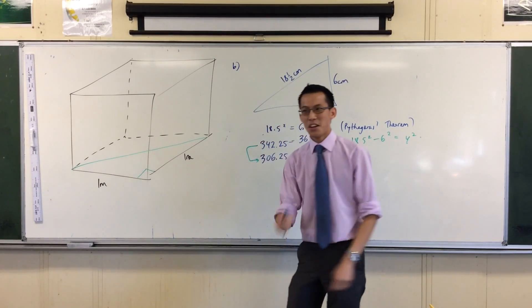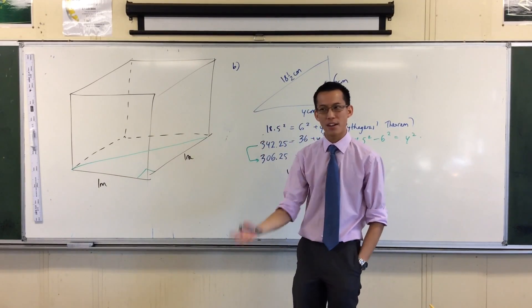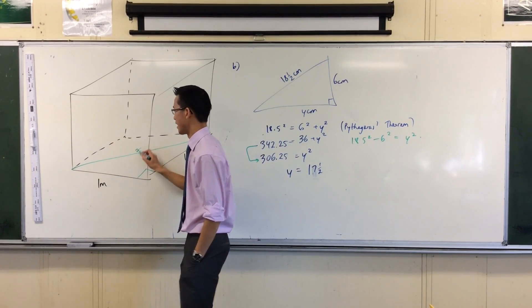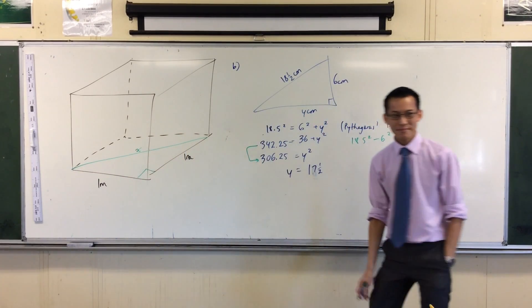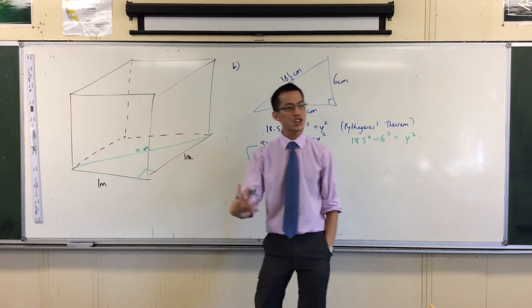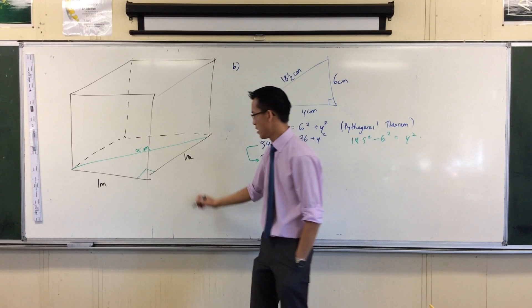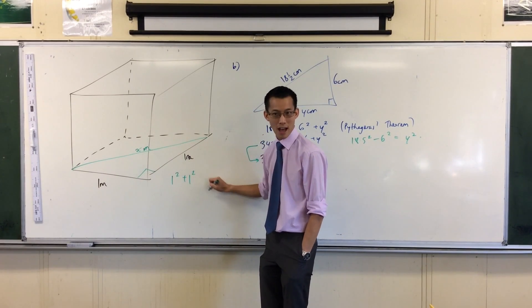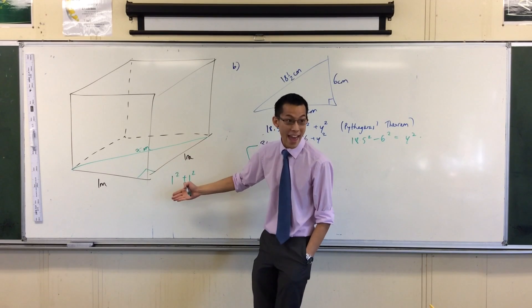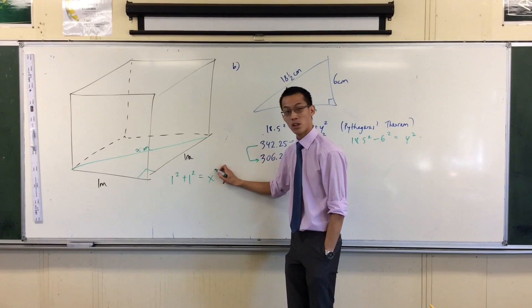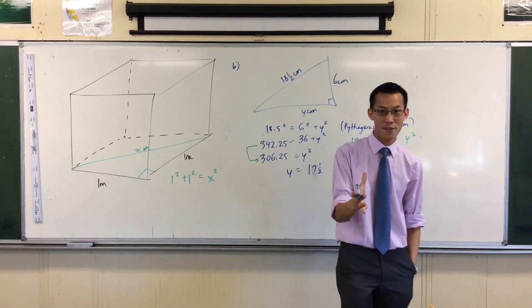So I can write out Pythagoras' theorem to work out this length. Let's call it, I'm very original, so I'm going to call it x. x meters is the length. Well what equation should I write with Pythagoras? I should write the sum of the two shorter sides, sorry, the sum of the squares of the two shorter sides, that's equal to the square of the longer side.